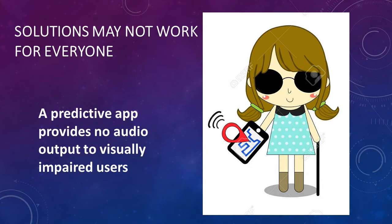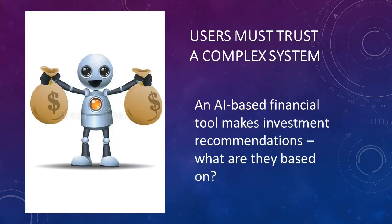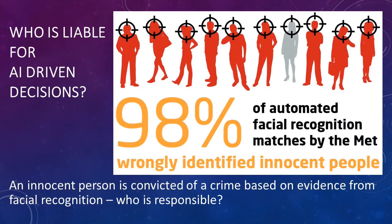A fifth risk is that the user must trust a complex system. An example of this risk is an AI-based financial tool which makes investment recommendations without the user understanding what they are based on.